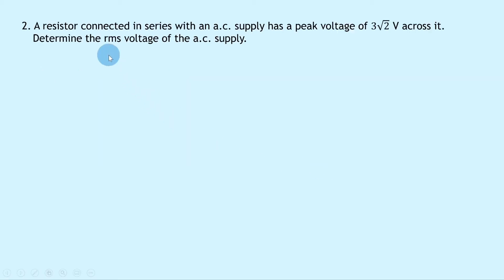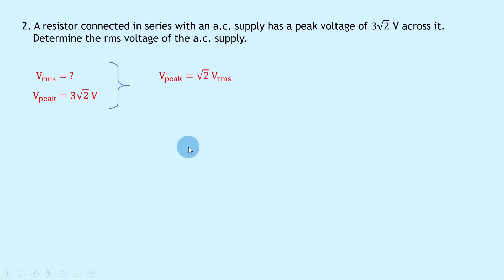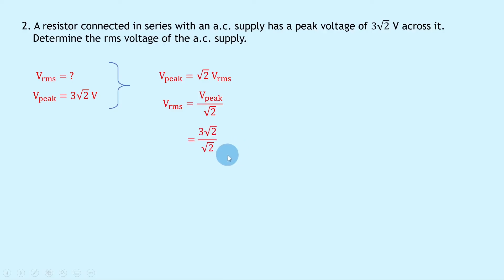Question two says that a resistor connected in series with an AC supply has a peak voltage of 3 root 2 volts across it. Determine the RMS voltage of the AC supply. Writing down what we know, we're trying to find Vrms. We know that Vpeak is 3 root 2 volts. Writing down our equation, we have Vpeak equals root 2 times Vrms. Rearranging for Vrms, we divide both sides by root 2, so we get Vrms equals Vpeak over root 2. Substituting in gives 3 root 2 over root 2, the root 2s cancel, and we're left with 3 volts for the RMS voltage.